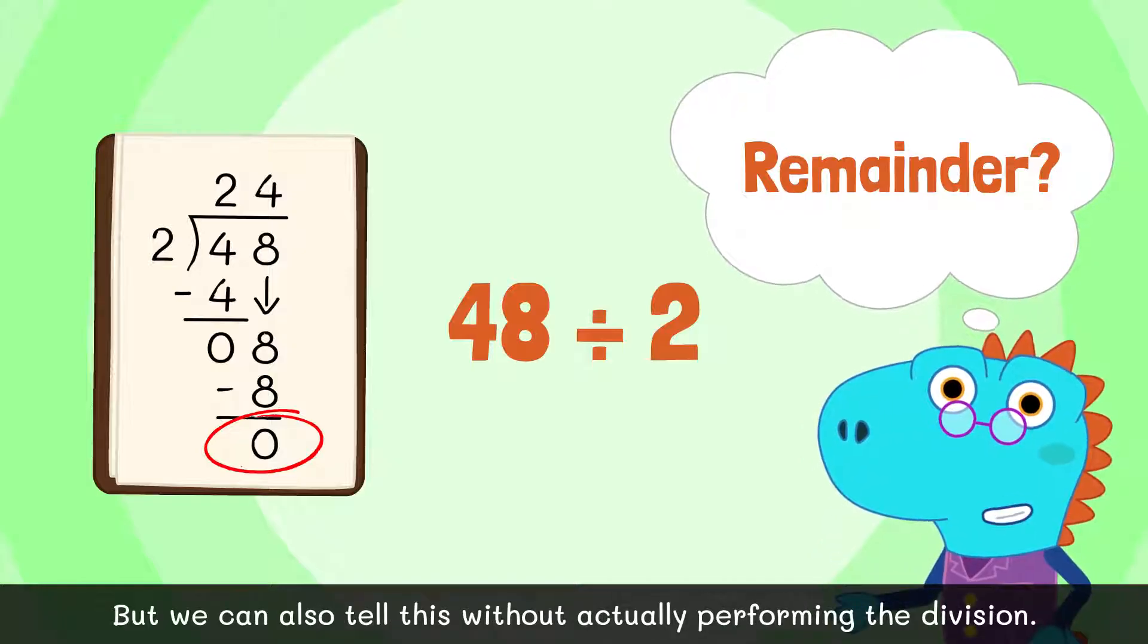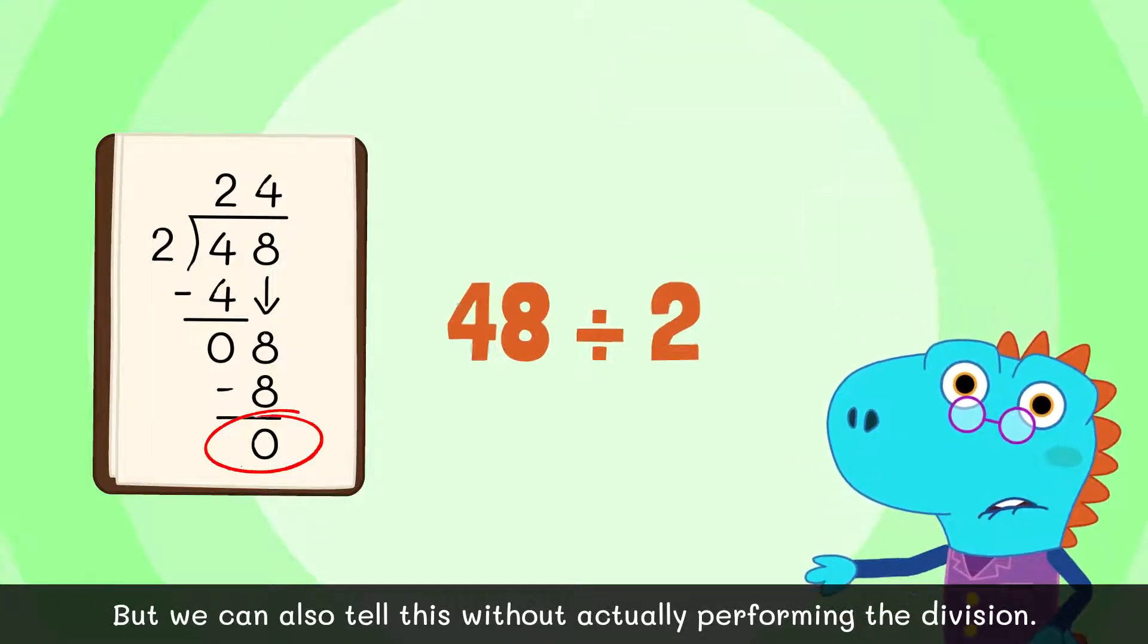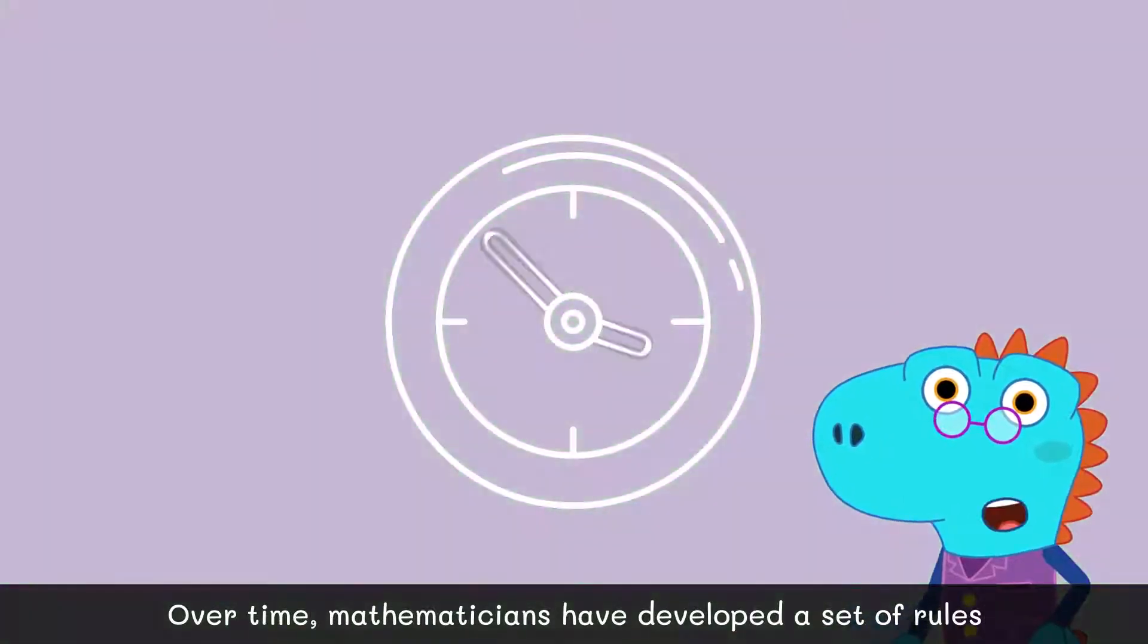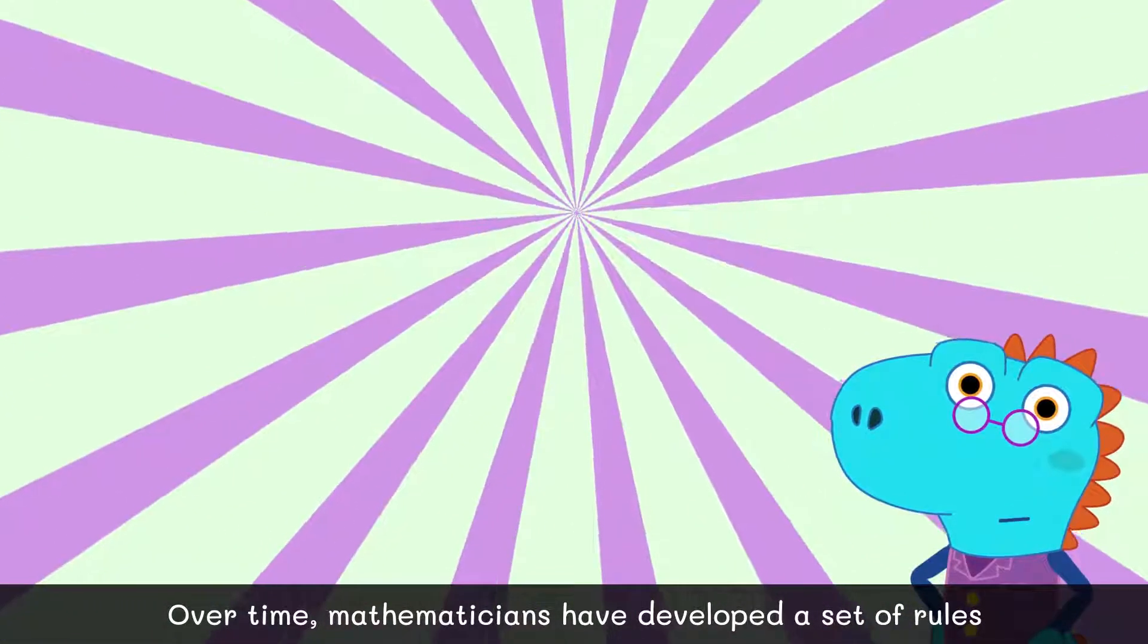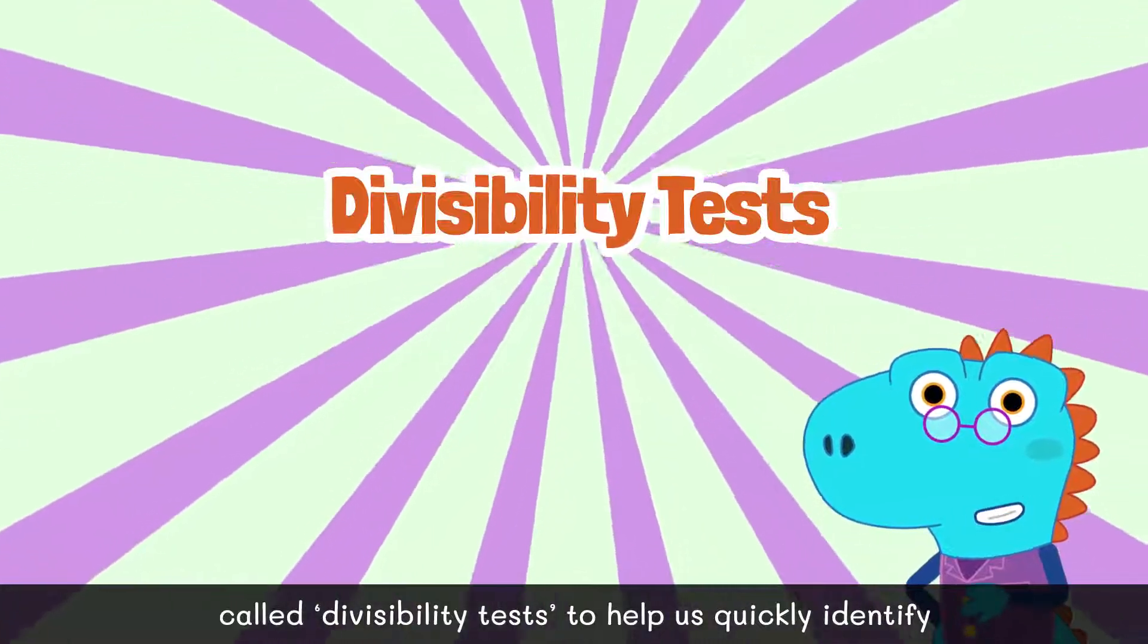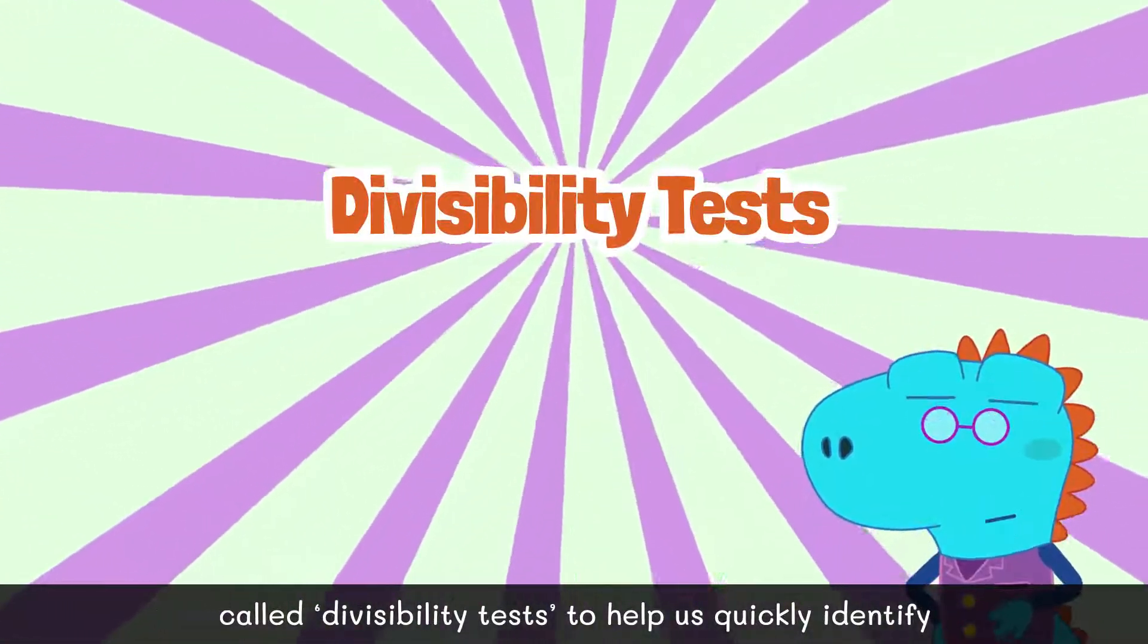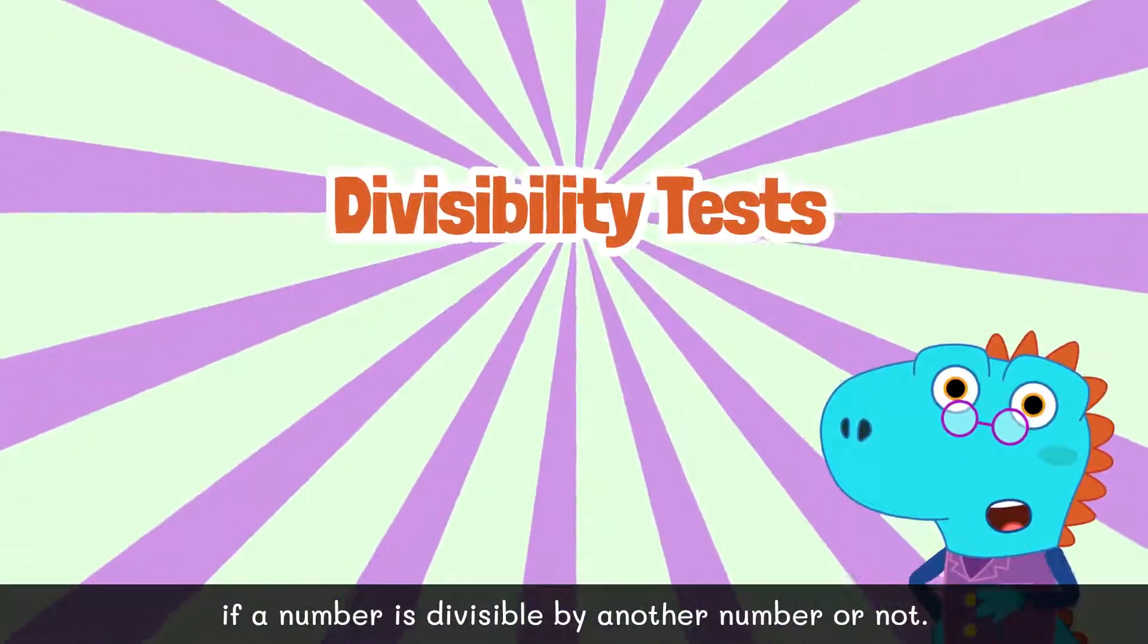But we can also tell this without actually performing the division. Over time, mathematicians have developed a set of rules called divisibility tests to help us quickly identify if a number is divisible by another number or not.